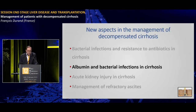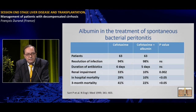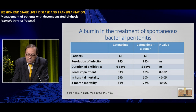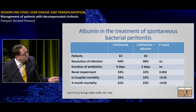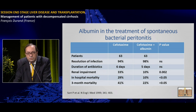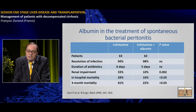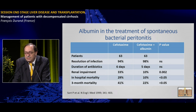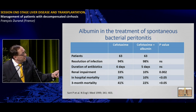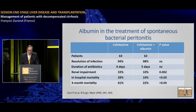Regarding albumin and bacterial infections, a relatively old study published in 1999 showed that in patients with spontaneous bacterial peritonitis, concomitant administration of albumin was associated with less renal impairment, improved survival, reduced in-hospital mortality, and reduced remote mortality. It is now widely recommended to give albumin in combination with antibiotics in patients with spontaneous bacterial peritonitis, though this is based on a single study with a relatively limited number of patients.